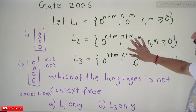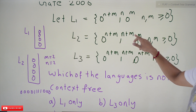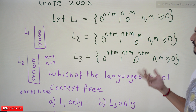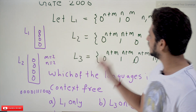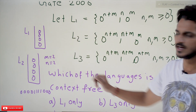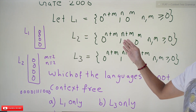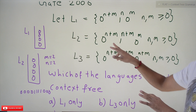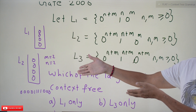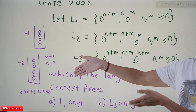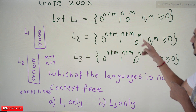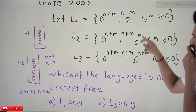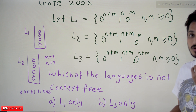Coming to the second one: L2 = 0^(n+m) 1^(n+m) 0^m. Take n=2, m=2. Whenever you find zeros, push onto the stack. Whenever you find ones, pop from the stack. If these two are equal, the stack will be empty. But then there is no way to check for the m value — 0^m cannot be verified.